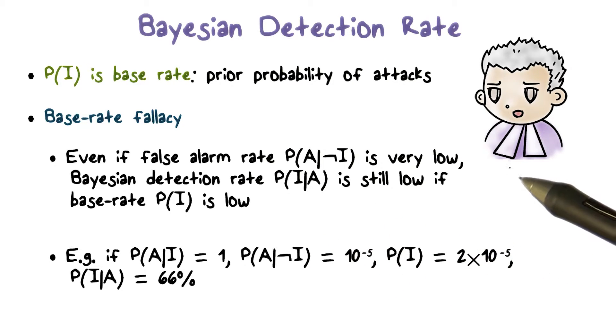For example, using the formula in the previous slide, if we plug in these numbers, meaning the detection rate is 100%, false alarm rate is 10 to the minus 5, and the base rate is 2 times 10 to the minus 5, then the Bayesian detection rate is only 66%.